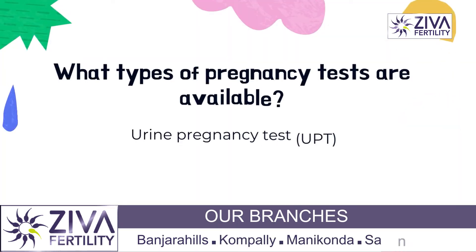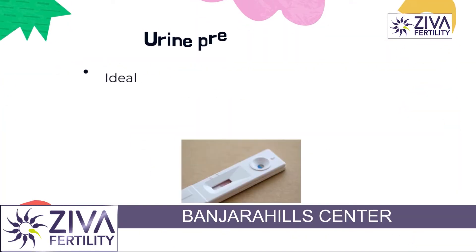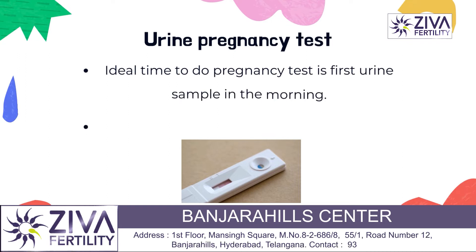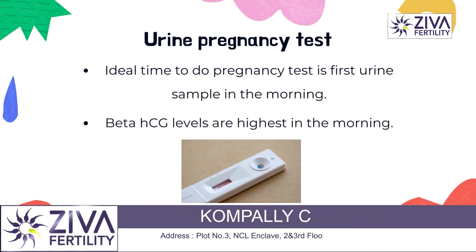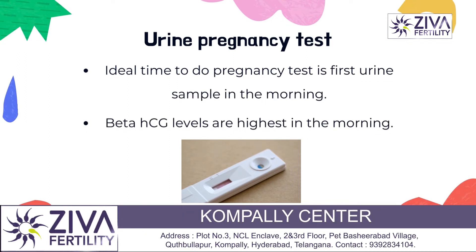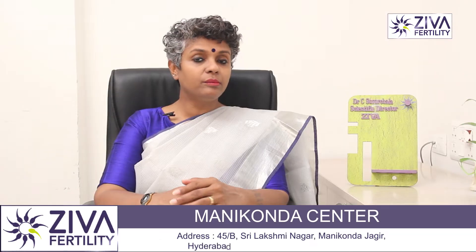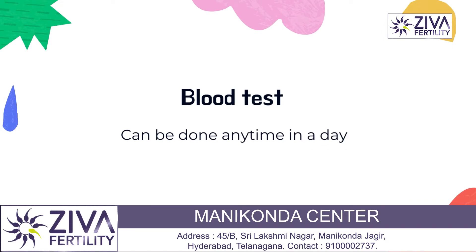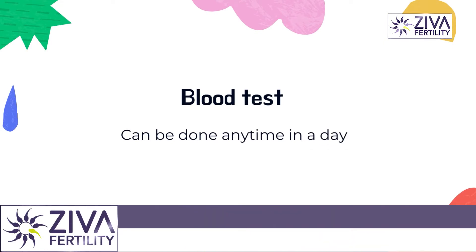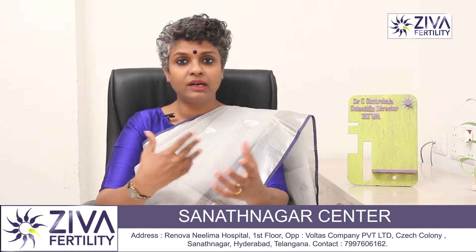Basically, a pregnancy test is done either with a blood sample or with a urine sample. When it comes to a urine sample, the ideal time and the ideal sample is the first sample in the morning — it is said that the beta-HCG levels are highest in the first sample in the morning. A blood test can be done at any time of the day; it does not require taking a blood sample only in the morning.